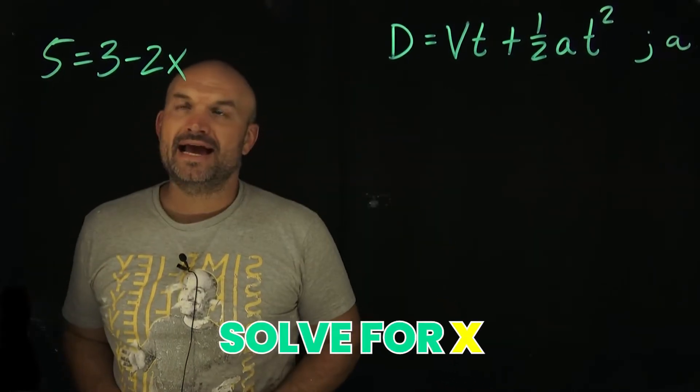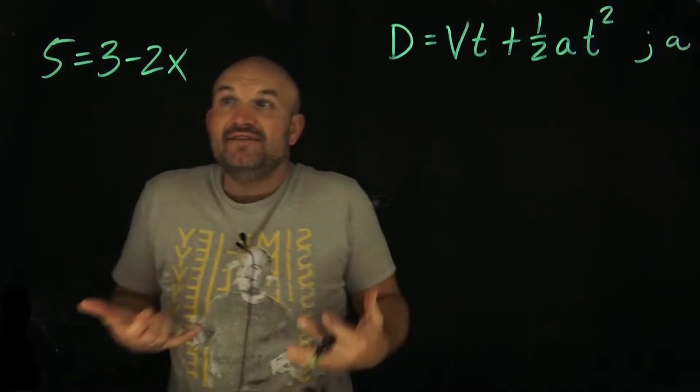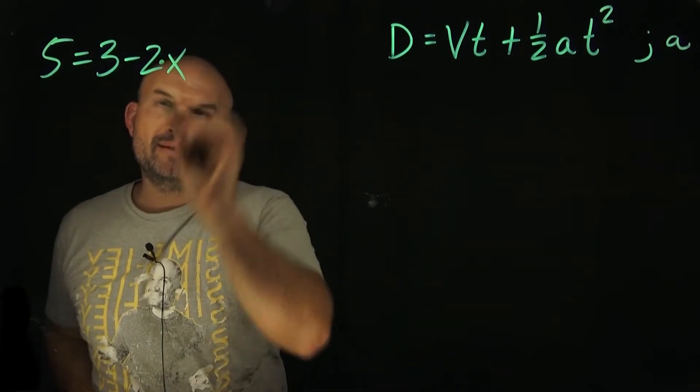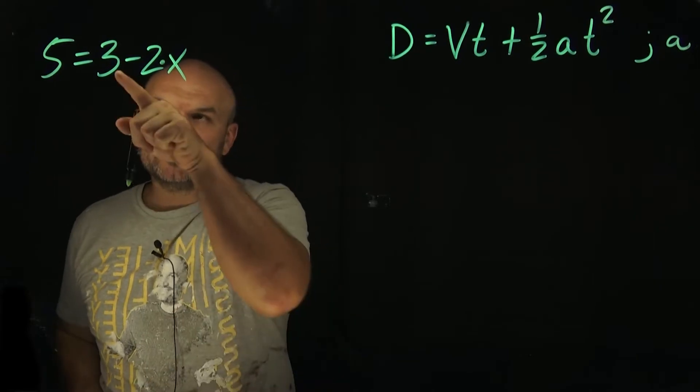So in this case, we need to solve for x. And what we need to do when we're solving for x is identify what operations are being applied to our variable x. So first of all, we're being multiplied by a negative 2, and then here we're actually adding a 3.